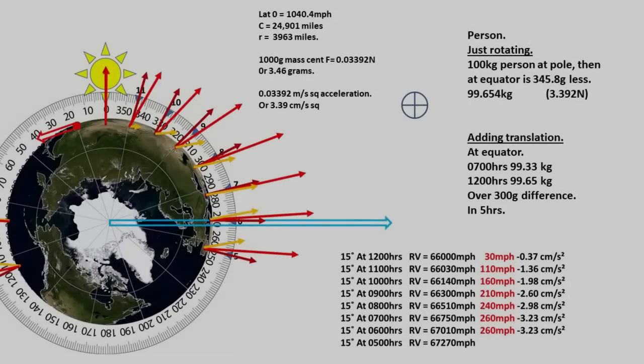This is the vectors mapped out for 7 hours. A 100 kg person would change in their measured weight by 300 grams in 5 hours. Now imagine 100,000 kg of water constantly accelerating and decelerating.